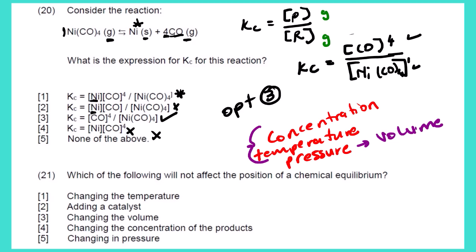The question asks which will NOT affect the position of chemical equilibrium. Changing temperature will affect it. Adding a catalyst will NOT affect the position of equilibrium — so this is a possible option. Changing volume will affect it. Changing concentration will affect it. Changing pressure is the same as changing volume. So the best option is option 2 — adding a catalyst.